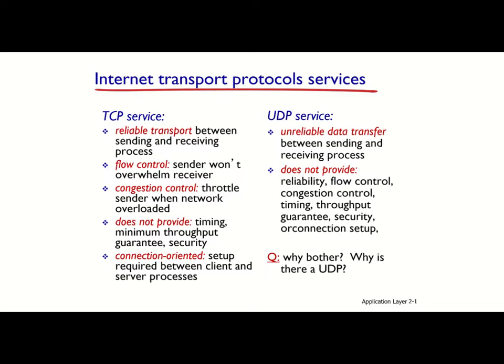For every connection you have to set up a new TCP session. TCP also has some downsides: it doesn't provide timing guarantees, doesn't provide minimum throughput, and doesn't guarantee how fast data will be transferred over the network. Also, it doesn't provide security — if you want security for some applications you need an extra layer, because TCP doesn't give you secure communication. On the other hand, UDP is unreliable, doesn't provide flow control or congestion control, and doesn't guarantee throughput or security.